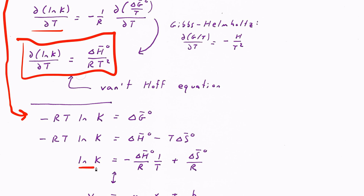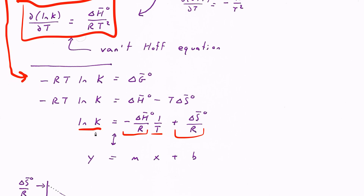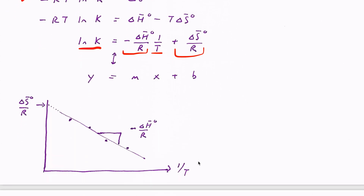This expression shows how ln K depends on temperature, specifically on 1/T: it looks like some constant times 1/T plus another constant. In other words, ln K is a linear function of 1/T — it has the form y = slope × (independent variable) + intercept. From an experimental perspective, if you plot ln K as a function of 1/T, doing the reaction at 298 Kelvin and measuring the equilibrium constant gives one point on that graph.